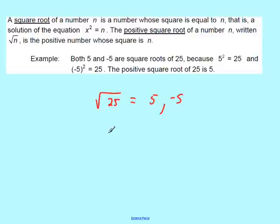So what we want to talk about is what's called the principal square root. The principal square root is the positive root of a number. So the principal square root or the positive square root of 25 is equal to 5. Sometimes you'll see it like this, which means the principal square root.